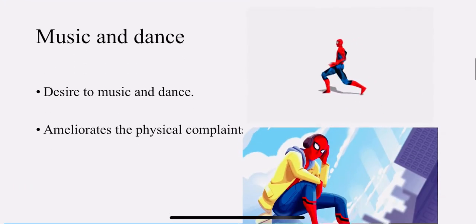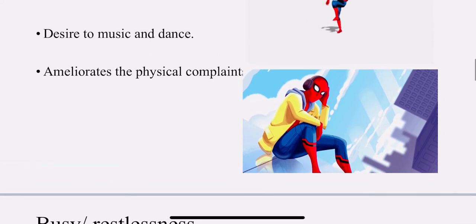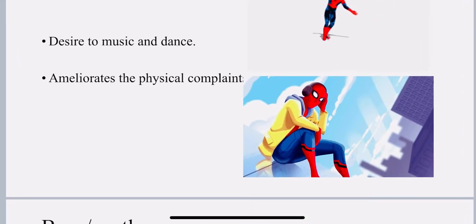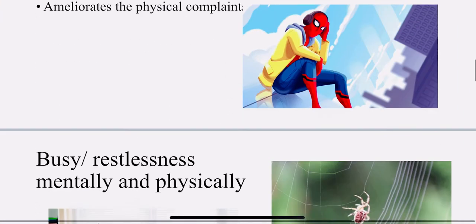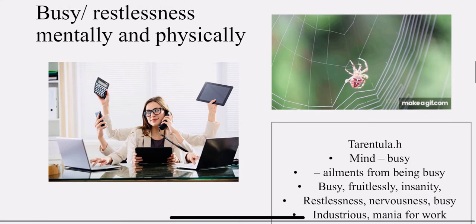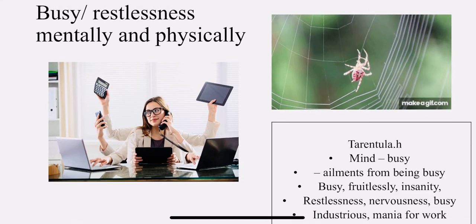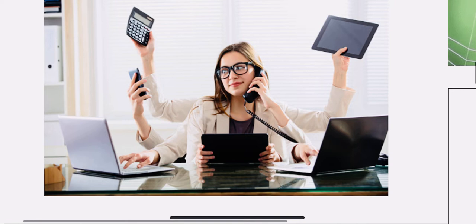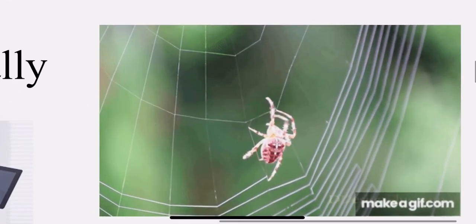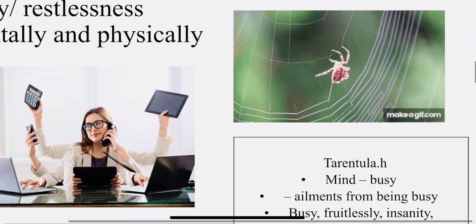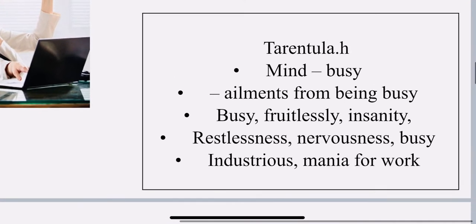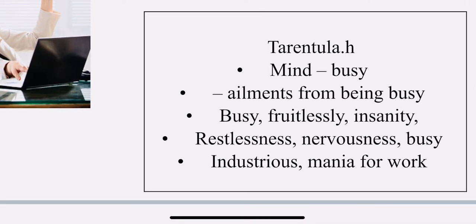The mental symptoms: music and dance. The desire for music. Music and dance is going to ameliorate the physical complaints. You can see the spider group — they love to dance, and it is going to ameliorate the physical complaints. They are busy and restless, mentally and physically. You can see the person: she is so busy doing a lot of work — she is on a call, calculating, working on a laptop. Same way the spider is so busy building his web. Tarantula mind is busy. Ailments from being busy — so the ailment of the spider group is from being busy.